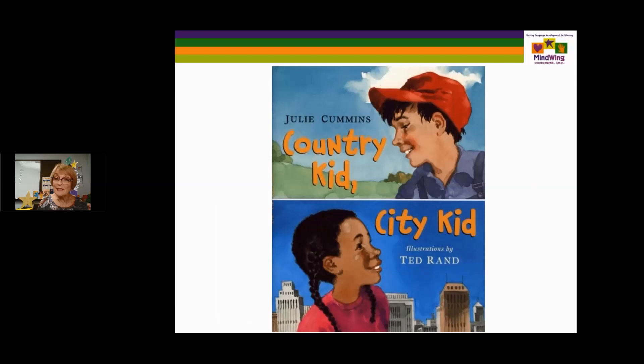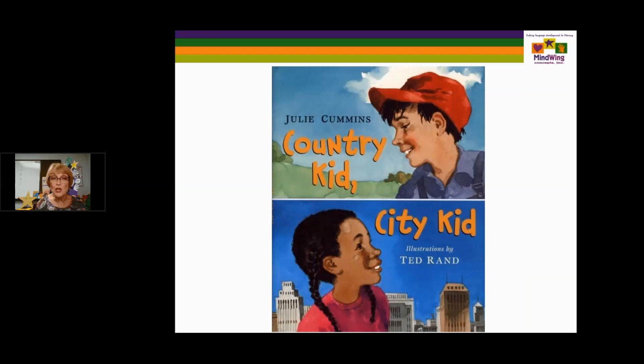Country Kid, City Kid is a compare-contrast story about two children, with facing pages contrasting two children who live in different settings. There are many similarities communicated by the illustrations — when the girl is wearing a red shirt, the boy is wearing a red hat, so there are color connections. They end up meeting at a place called Camp Eagle where they become friends, probably foreshadowed by the fact that they wear similar colors throughout.